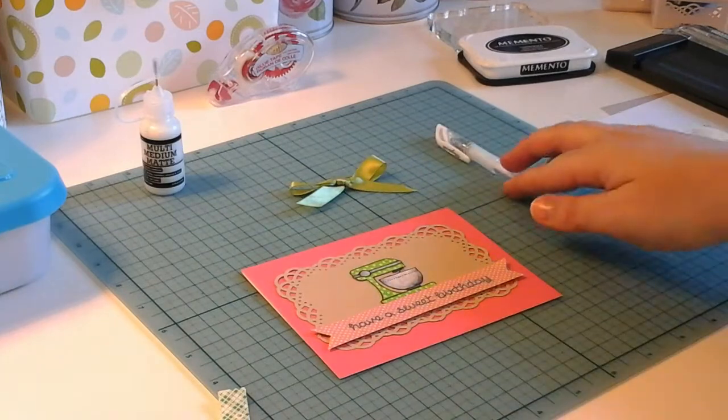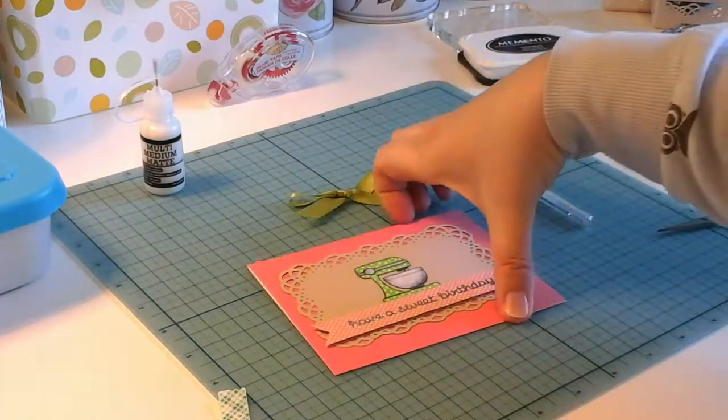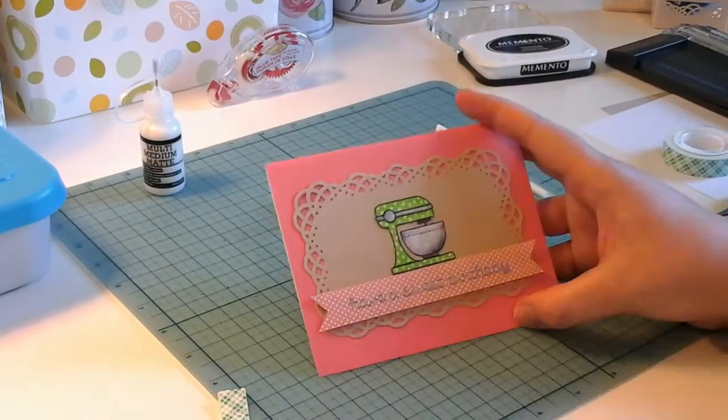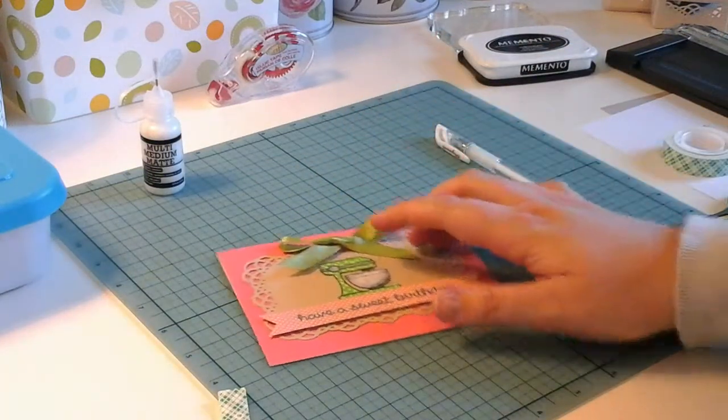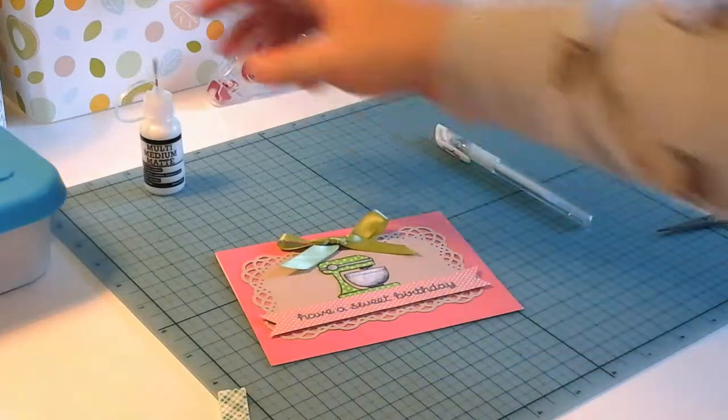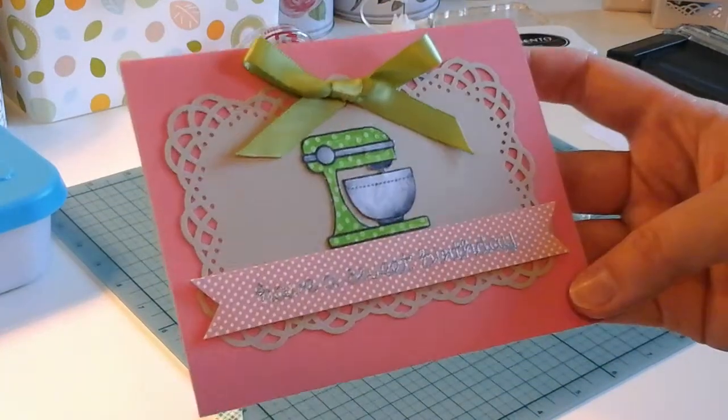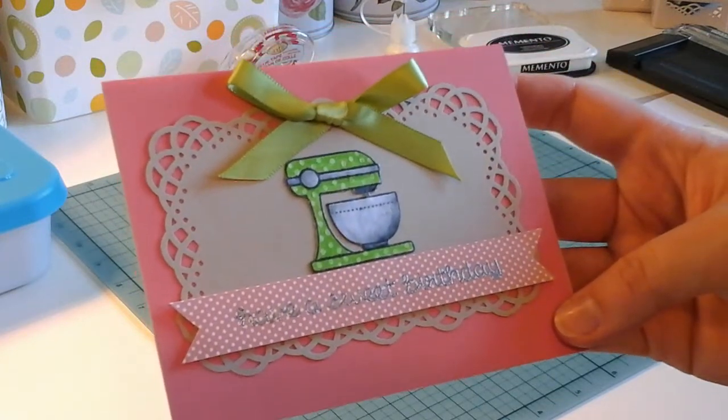Now the last thing I want to add to my card is a little bow. I did have a little mistake on the lace in the top here. You can barely see it, but I wanted to do a little bow anyway and I thought that would be a perfect place to put it. So I'm going to attach that with my Ranger Multi Medium Matte again. And there is the final card. I hope you enjoyed it and I hope you have a great day.